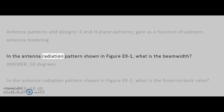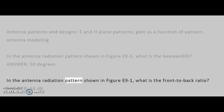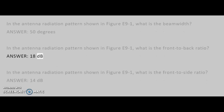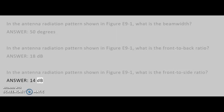In the antenna radiation pattern shown in figure E9-1, what is the beam width? Answer: 50 degrees. What is the front-to-back ratio? Answer: 18 dB. What is the front-to-side ratio? Answer: 14 dB.